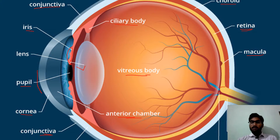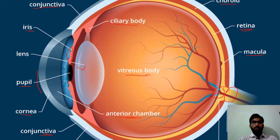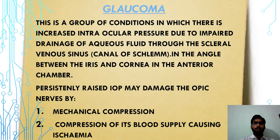There is also the blind spot of the eye where no image is formed. The optic nerve carries the image signal to the brain.